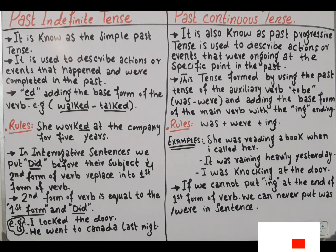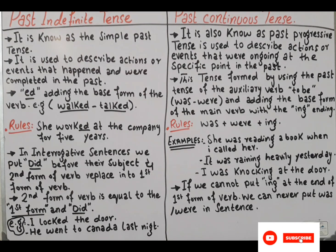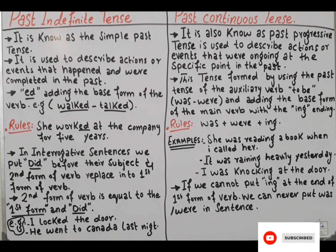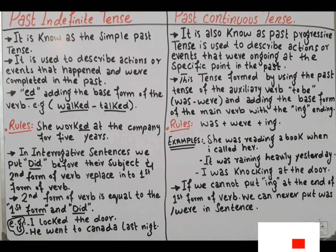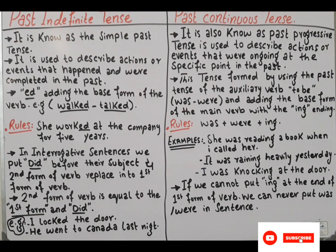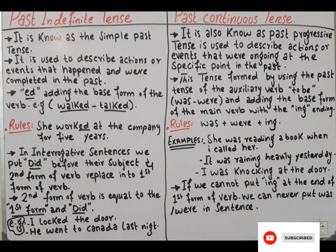There is a rule for regular verbs: simply add 'ed' to the base form of the verb to create the past tense. For example, 'walk' becomes 'walked' and 'talk' becomes 'talked.' Irregular verbs have a unique past tense form that does not follow the 'ed' pattern. There is a comparison between regular verbs and irregular verbs. Remember that 'ed' is added to regular words, while irregular verbs don't follow this rule. For example, 'go' becomes 'went' — this is an example of an irregular verb.